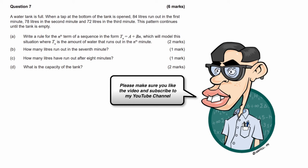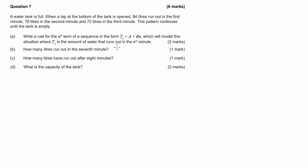What this question is asking us to do is write a rule for the nth term of the sequence in this form. We then have to figure out how many litres of water run out in the seventh minute, how many total litres have run out after eight minutes, and finally what the capacity of the tank is.